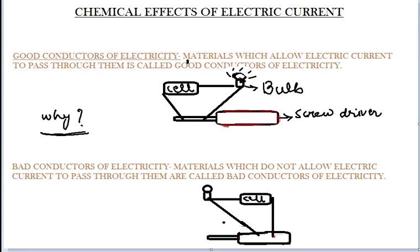The reason behind it is that metal is a good conductor of electricity. So when the circuit is complete, the electric current will pass through it and light the bulb. But wood is not a good conductor of electricity — it is a bad conductor. So it will not allow electric current to pass through it, and the bulb will not glow because the circuit is incomplete.